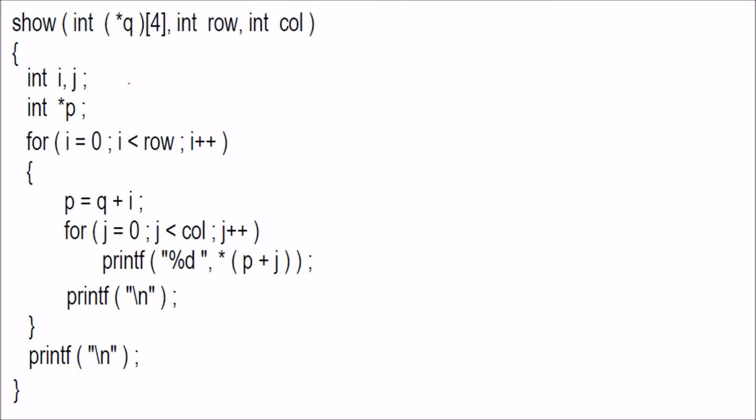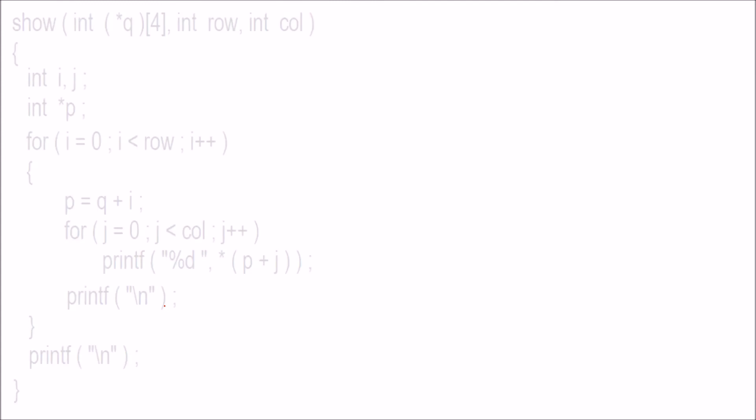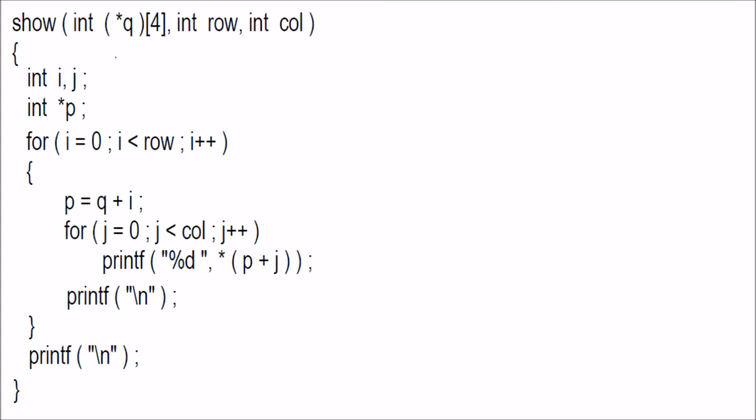The other way of doing the same thing is: you are again passing the array by name. This array by name is taken in a pointer to array. This pointer to array, we will take in some p, we have already defined it here.